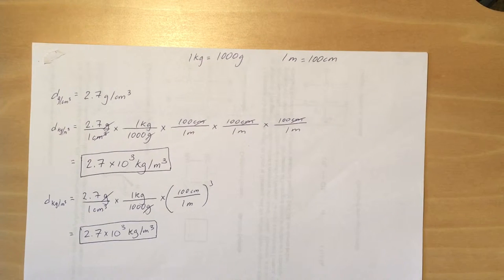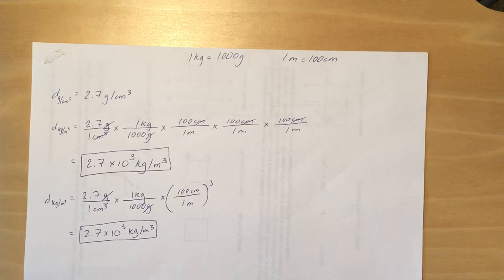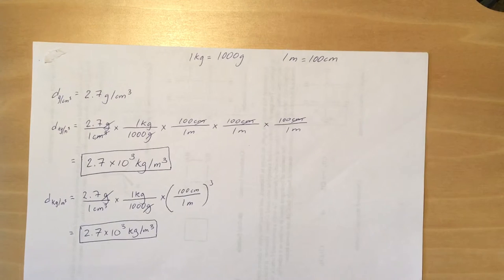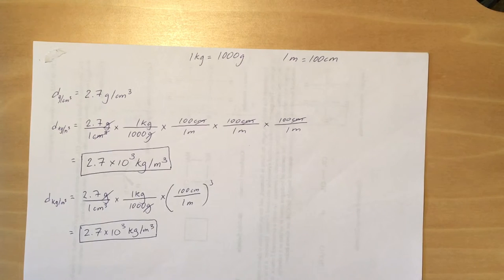Remember that the conversion factor is one meter equals 100 centimeters. We've got to remember to cube the whole conversion factor, not just the centimeters and meters. Oftentimes, undergraduate students forget to cube the hundred, the number 100.